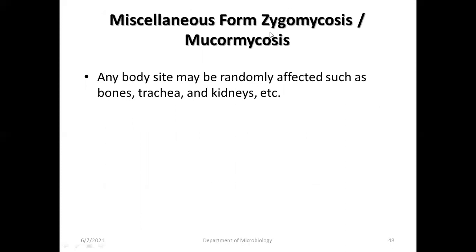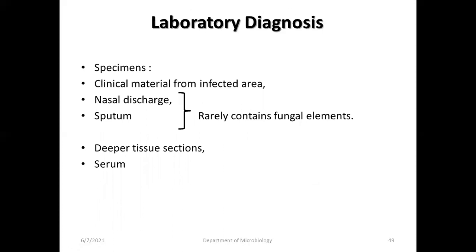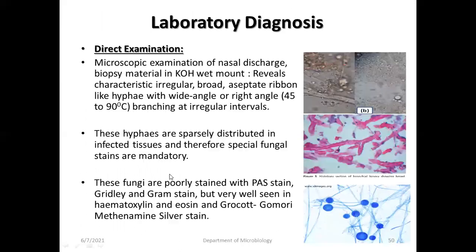Miscellaneous form can affect any body site such as wounds, trachea, or kidney. For laboratory diagnosis, clinical material from infected sites can be collected; nasal discharge rarely shows fungal elements. Deeper tissue biopsy and direct KOH wet mount may show characteristic irregular, ribbon-like aseptate hyphae with wide-angle, right-angle branching at irregular intervals. Hyphae are sparsely distributed in infected tissue; therefore, special fungal stains such as H&E stain or Gomori methenamine silver stain are mandatory.